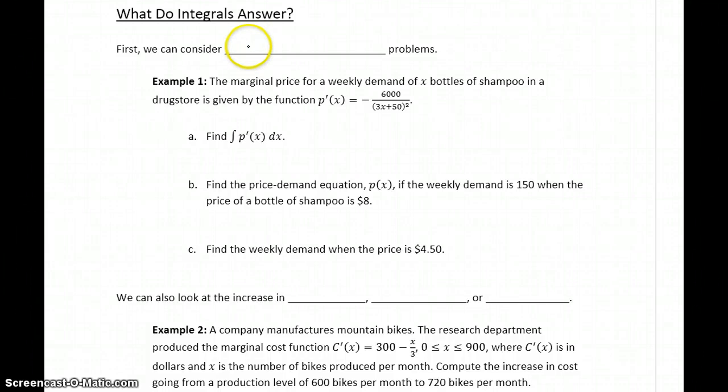The first thing we can consider are initial value problems. So in initial value problems, we start off with some marginal cost function, marginal profit function. In example one, we have a marginal price function. We integrate that to get back to the original function, and then using some initial condition, we can find the function itself.